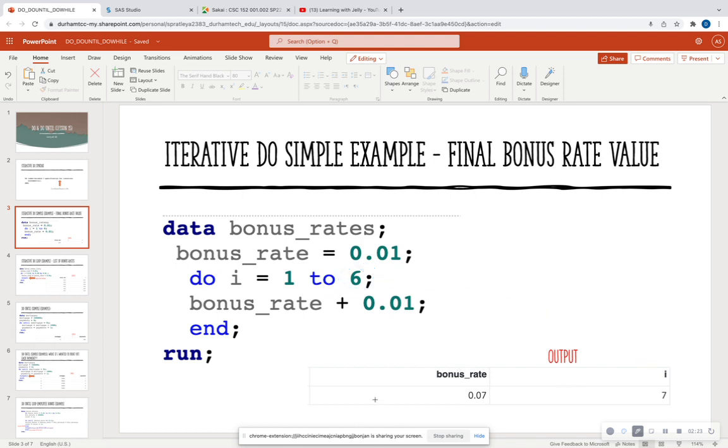So this is just a simple output. It's going to output one observation that's going to have your last bonus rate and your last i value. So very simple do loop, where I'm iterating through a variable such as bonus rate, each time I'm adding another 1% to that bonus rate, and then I'm just going to output what the final result is.